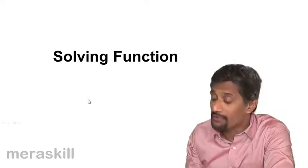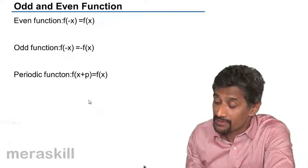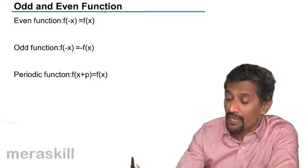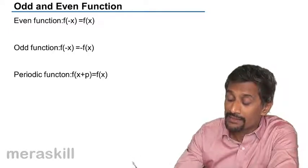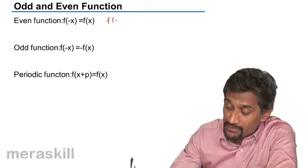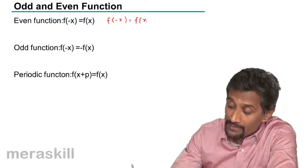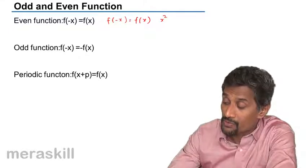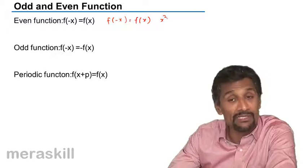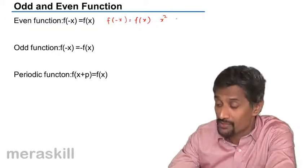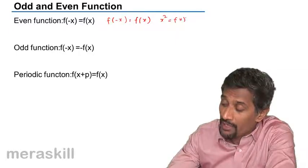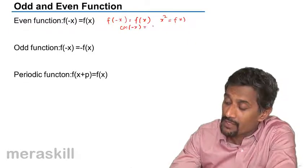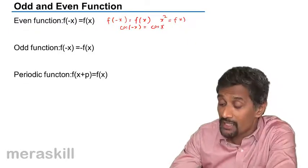Next is how do you solve various types of functions. We have various types of functions: odd functions and even functions. An even function satisfies f(-x) = f(x). For example, x squared — whether you put x as 1 or x as -1, you still get x squared. Similarly, cos(-x) = cos(x). So this is an even function.